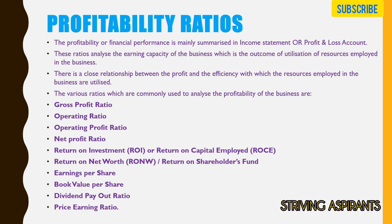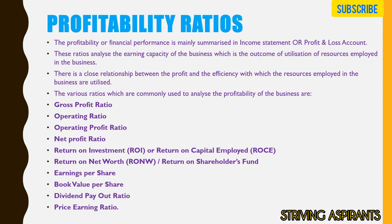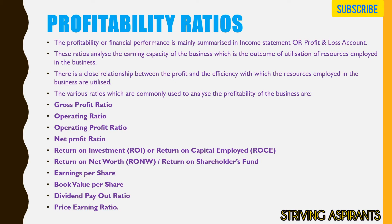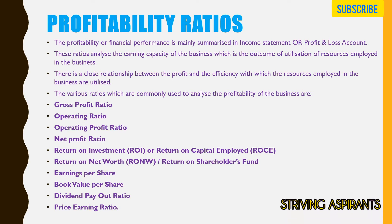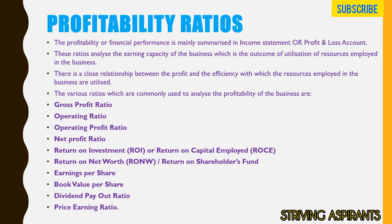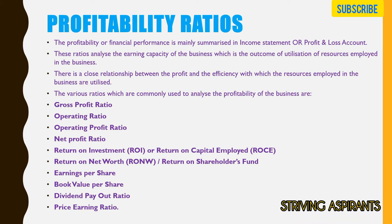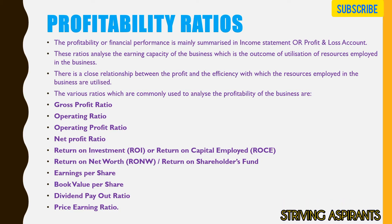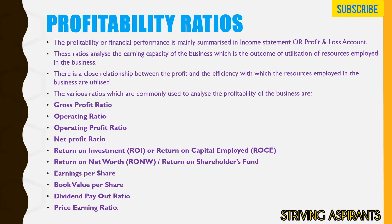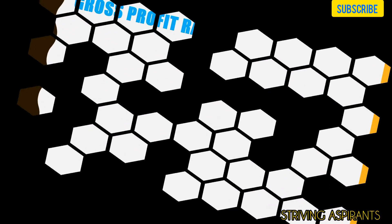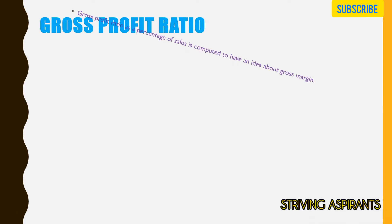The various ratios coming under profitability are: gross profit ratio, operating ratio, operating profit ratio, net profit ratio, return on investment, return on net worth, earnings per share, book value per share, dividend payout ratio, and price-earnings ratio. Let us check all these ratios one by one.